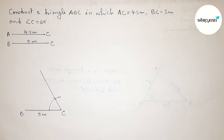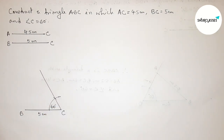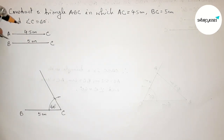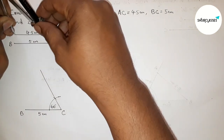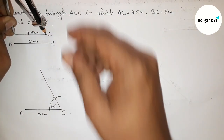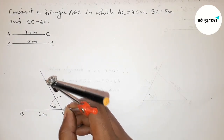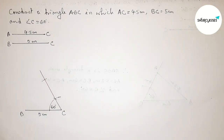Checking with the help of a protractor — this is perfectly a 60 degree angle, so angle C equals 60 degrees. Next, taking the length AC equals 4.5 centimeters with the help of a compass. Putting the compass on point C and marking the arc.